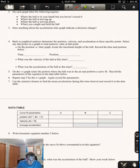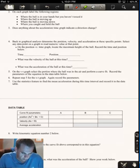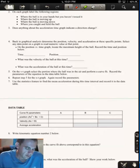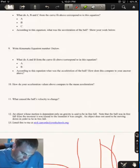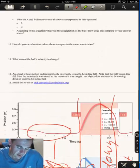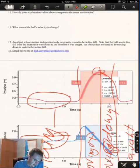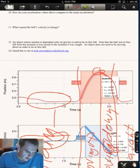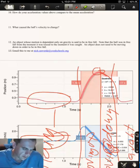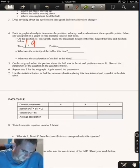In graphical analysis, determine the position, velocity, and acceleration at these specific points, the ones below. Select any data point on my graph to read the numeric value at that point. On the position versus time graph, locate the maximum amount of the ball and record the time and the position below. Well, I have the graphs down below, so I'm going to take a look at it. Right there at the top of that parabola, it's at its highest point. If I look down at my graph, that happened at about 1.8 seconds or so, and it looks like it's about 0.95 meters up. So I'm going to say 1.9, 0.95, good to go. It's just an estimate.